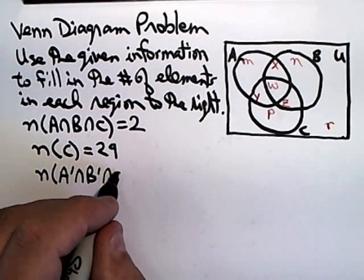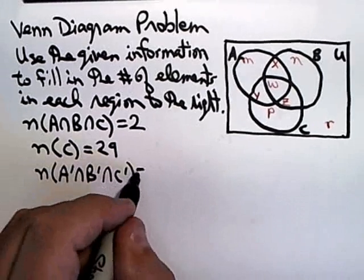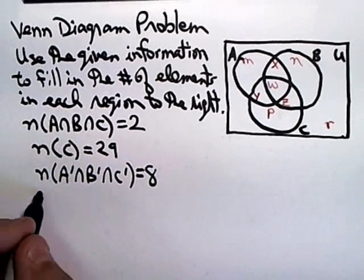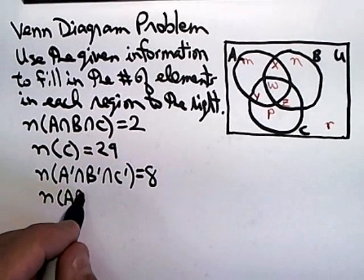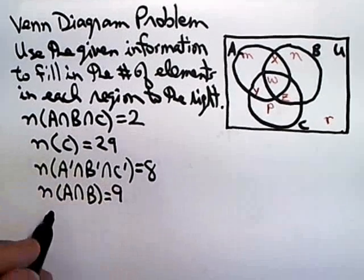We know that the number of elements in A intersect B is 9.